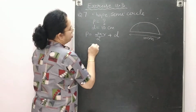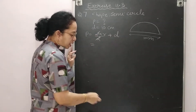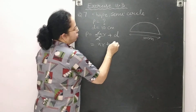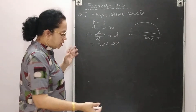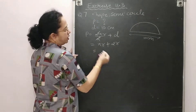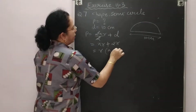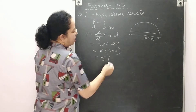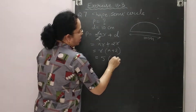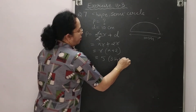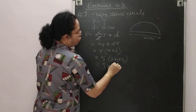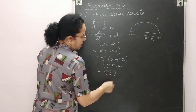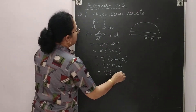Perimeter of semicircle = πr + diameter = πr + 2r = r(π + 2). The radius r = 10/2 = 5 cm. Substituting pi = 3.14 (since the number is not divisible by 7): 5 × (3.14 + 2) = 5 × 5.14 = 25.70 cm.